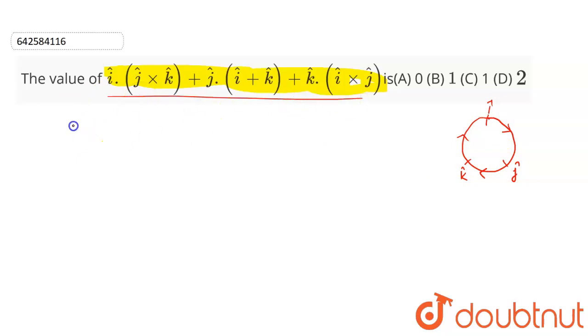So let us solve this equation. i cap dot j cap cross k cap - since j cap cross k cap is i cap, this becomes i cap dot i cap. Plus, according to the property of dot product, this can be written as j cap dot i cap plus j cap dot k cap.